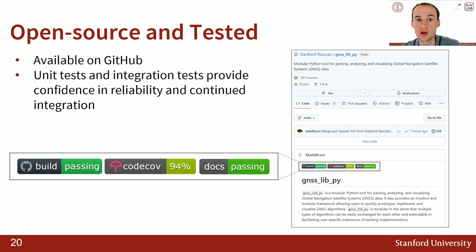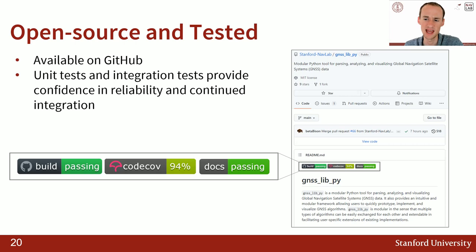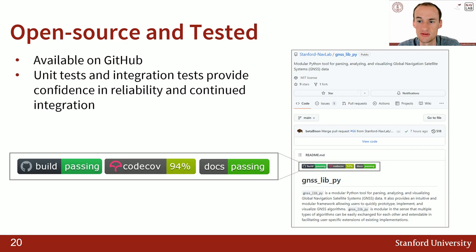We are available on GitHub — all of the code is open source and you can look it up right now. We are unit tested: our tests cover 94% of our code base, as well as additional build tests across Windows, Mac, and Linux to make sure that it works on every platform we cover. Those tests exist to provide confidence to our users in the reliability of our code.